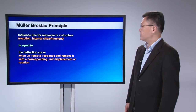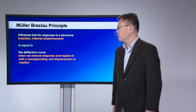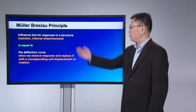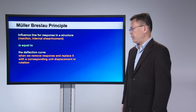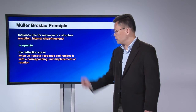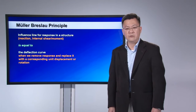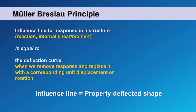The third approach is a graphical approach called the Müller-Breslau principle. The Müller-Breslau principle states that the influence line for a response in a structure is equal to the deflected shape when we remove that response and replace it with a corresponding unit displacement or rotation. In short, the influence line is equal to a properly deflected shape of the structure.